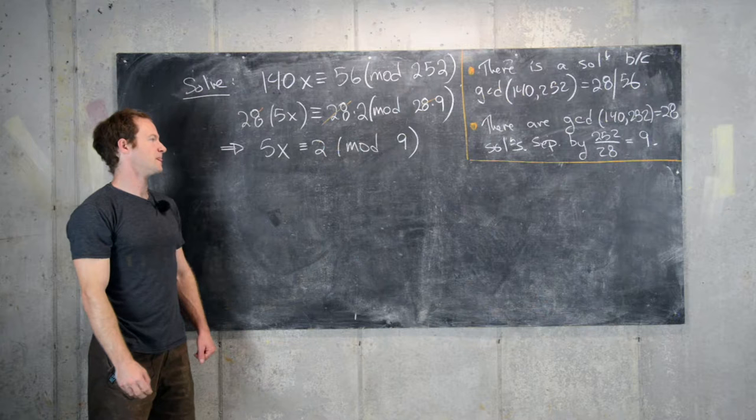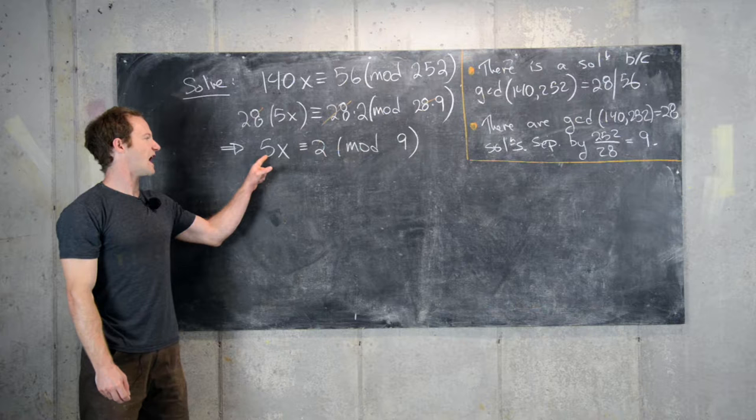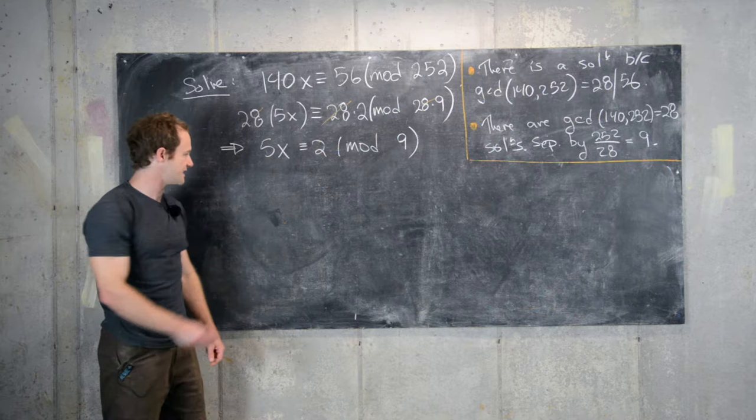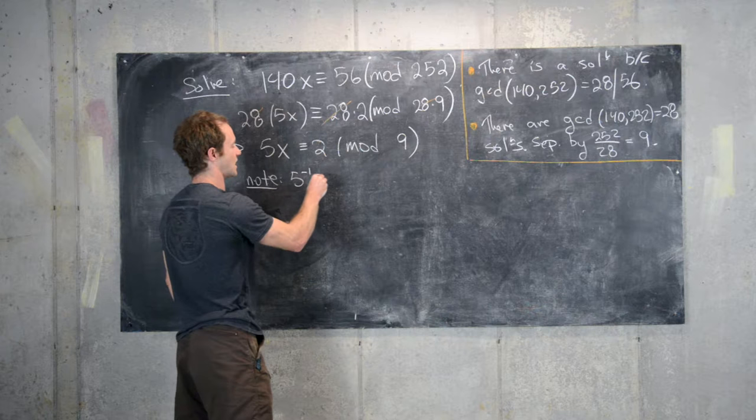So now we're almost ready to get our first values of x. So notice that 5 is relatively prime to 9, which means 5 has an inverse mod 9. And since 9 is a fairly small number, we can find that inverse fairly easy. And let's notice that 5 inverse is congruent to 2 mod 9.